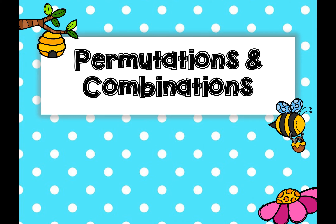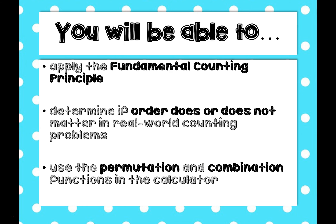Hi everyone! In today's video we are going to talk about different ways to count probabilities and likelihoods. We're going to be focusing on permutations and combinations. We'll first learn how to apply the fundamental counting principle, then look at some problems about whether order matters in real-world counting, and then use permutations and combinations depending on whether order matters.